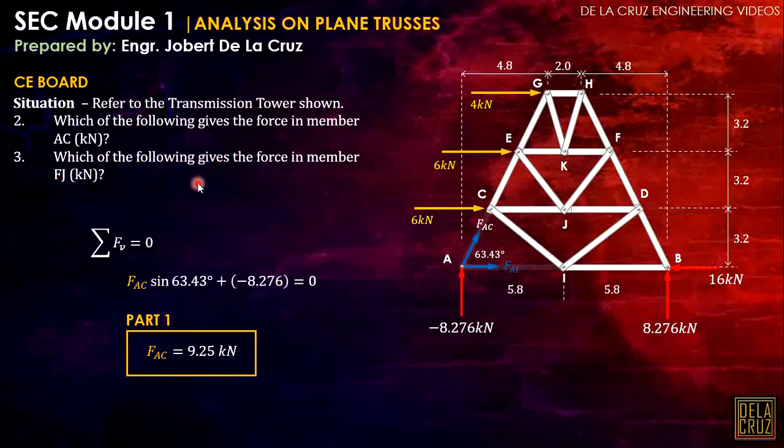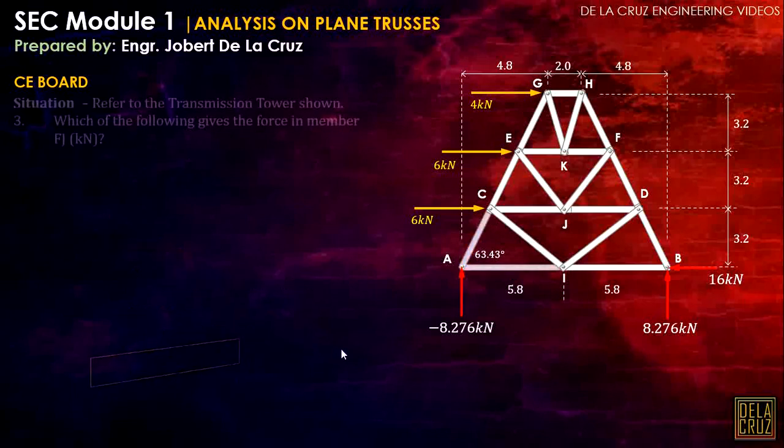Now for part 3, which of the following gives the force in member FJ? In this problem, the member we need to calculate is right here. So medyo komplikado if we use method of joints. So we need to use the method of sections. But take note, when using a method of section, dapat cut mo yung members kung saan three forces lang yung ma-expose. To use the equilibrium equation. If we will cut this truss here, four yung ma-expose, so we cannot solve that. So here, we will solve muna yung member DF, kasi ito yung katabi ng member FJ.